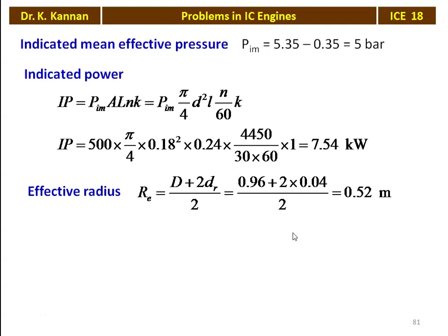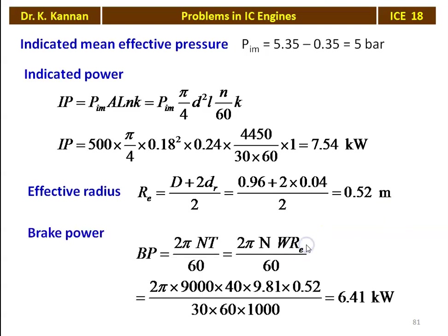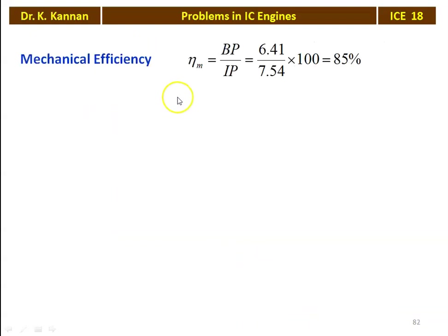The effective radius of the brake drum: R_e = (diameter of drum + 2 × diameter of rope) / 2 = (0.96 + 2 × 0.04) / 2 = 0.52 m. Brake power BP = 2πNT/60 = 2π × (9000 / (30 × 60)) × 40 × 9.81 × 0.52 / 1000 = 6.41 kW. Mechanical efficiency = BP / IP × 100 = 6.41 / 7.54 × 100 = 85%.